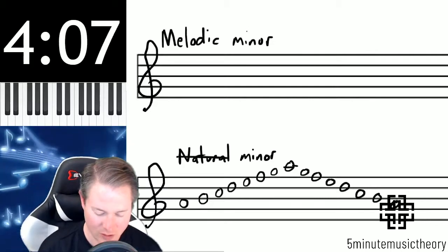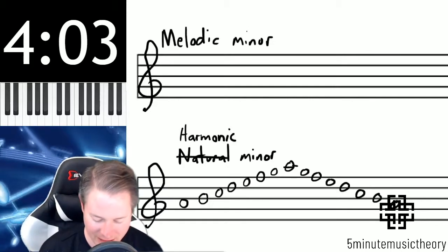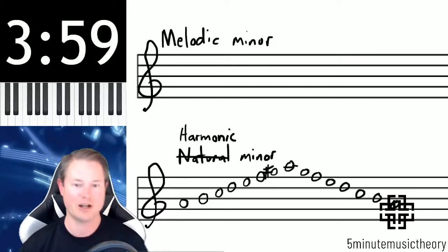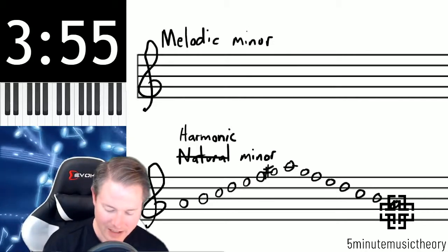To turn this into harmonic minor, remember we add a leading tone, so we raise that seventh scale degree and it turns into a G sharp, and then we have an A harmonic minor scale.